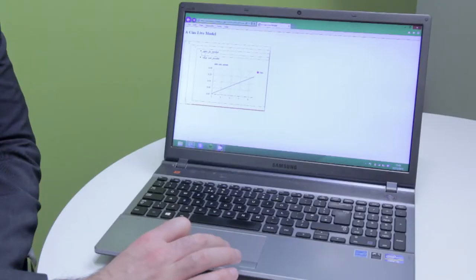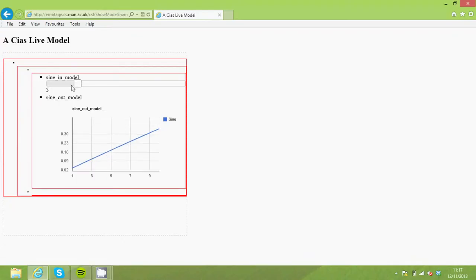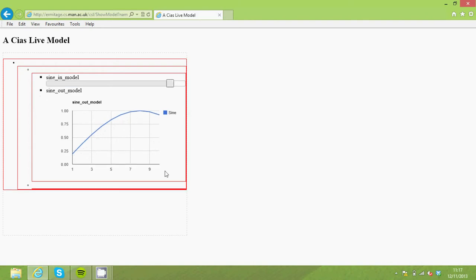As you can see I can adjust the value of the sine wave using this slider here and as I do that the sine wave displayed in the line chart also adjusts according to the frequency that I'm setting using the slider. And as you can see this is happening more or less in real time.